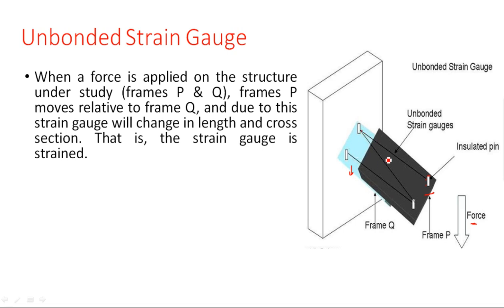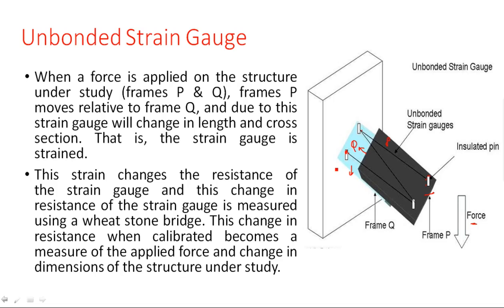Frame P and frame Q are connected with some gauge wire through the pins. When we apply some force either upward or downward, the gauge will expand or compress depending upon the movement of the frame, causing the resistance to vary. This change in resistance of the strain gauge is measured using a Wheatstone bridge, and when calibrated it becomes a measure of the applied force and change in dimensions of the structure under study.